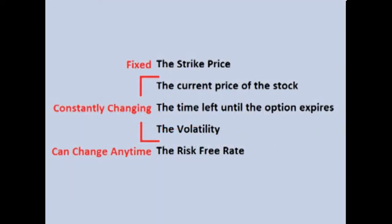In the last video, I mentioned that option pricing only has 5 inputs, or 6 if the stock pays a dividend. The strike price is fixed, but the stock price, the volatility, and the amount of time left until the option expires are constantly changing, and interest rates may change at any time. As these values change, they affect the price of the option. In the next video, we will begin to look at how these changing values affect an option's price by taking our first look at the Greeks. See you then.